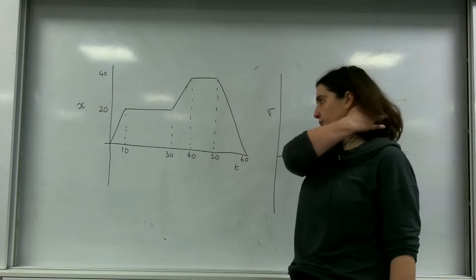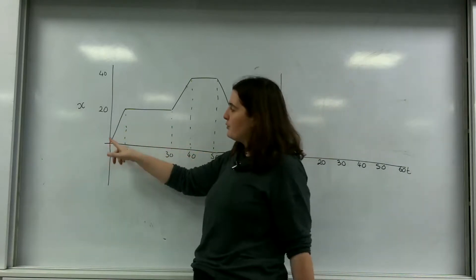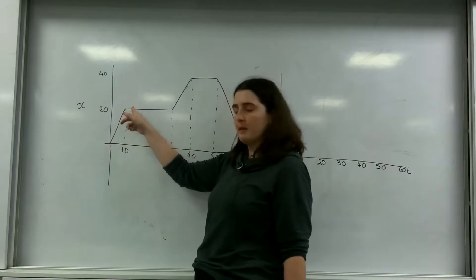So to my left I have a displacement time graph and what happens is this person has moved from 0 seconds to 10, they moved 20 metres.